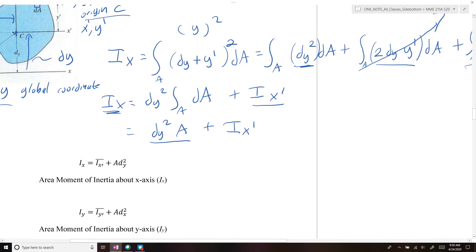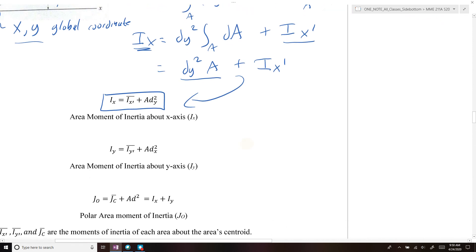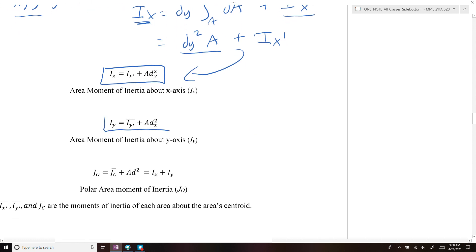And that's what we have here. And you can do the same process for Iy and for the polar moment of inertia, and you end up with these additional equations for the parallel axis theorem for Ix, Iy, and J0.